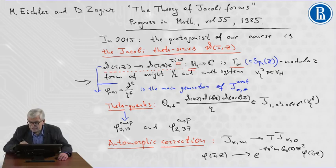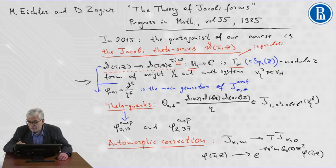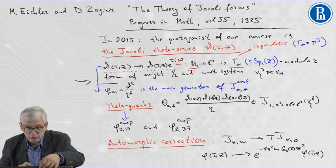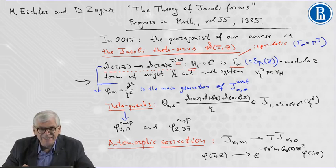And we get a function on the Siegel upper half plane which is a modular form with respect to a parabolic subgroup. Gamma infinity is a parabolic subgroup of the Siegel modular group. And this is our model for Jacobi modular group.